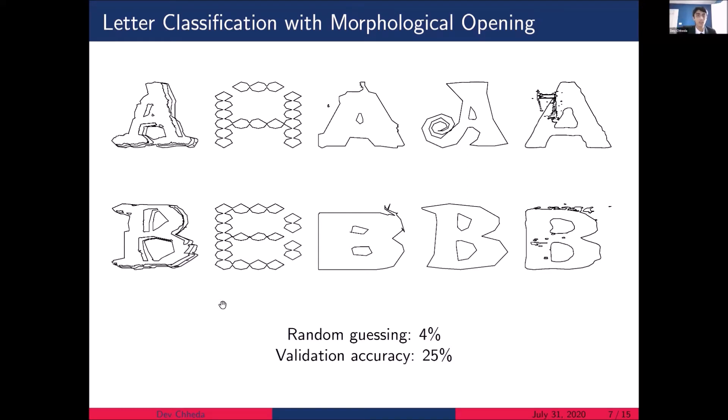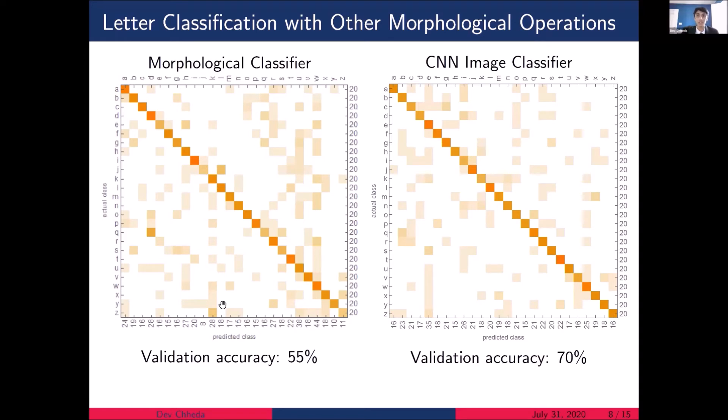So the next thing we try is using the other morphological operations as features for the shapes. And the best morphological classifier that we construct has a validation accuracy of 55%. We also compare this to a convolutional neural network, which is classifying these shapes based on images. And this classifier attains a validation accuracy of 70%. So again, we are seeing that perhaps the morphological operations are not able to capture as much information about each shape as just the image of each shape.